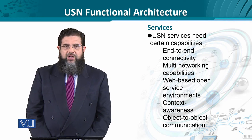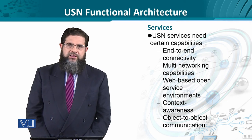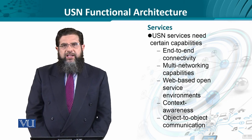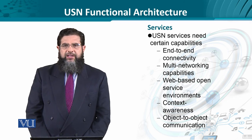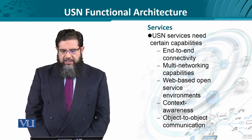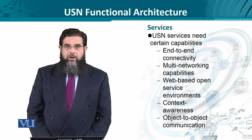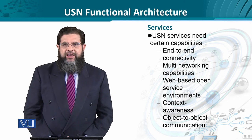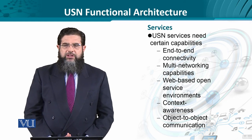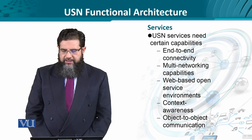The objects are associated with services in a variety of ways — certain objects need certain services, certain objects provide certain services, and certain objects facilitate certain services. Broadly, USN and services need certain capabilities: for instance, connectivity is a requirement, then networking capability across a variety of protocols and standards, and openness and interfacing like ANI — the application-to-network interface — which allows these services to be usable by certain objects.